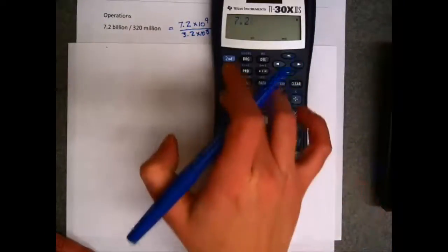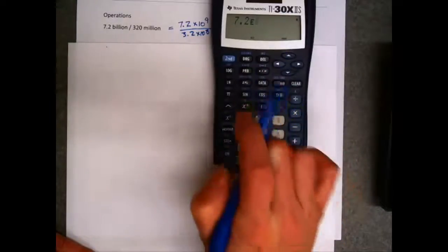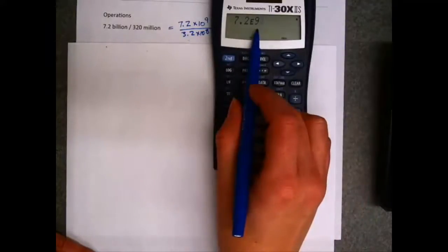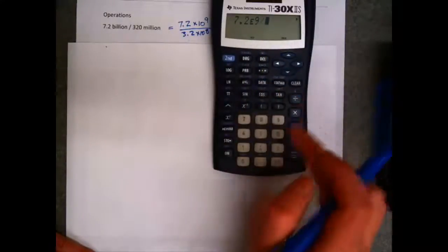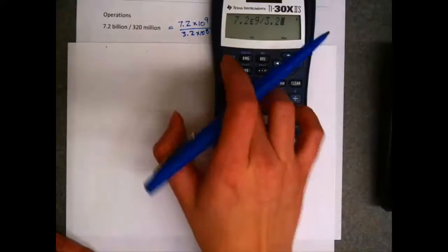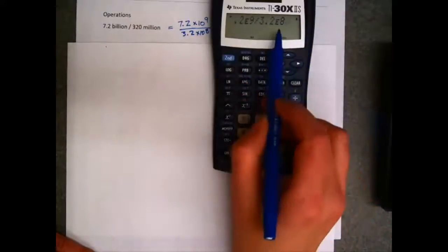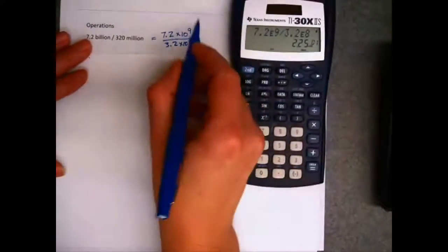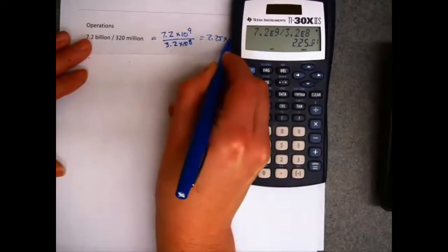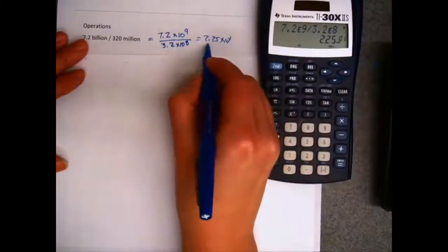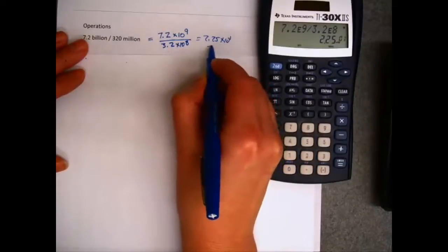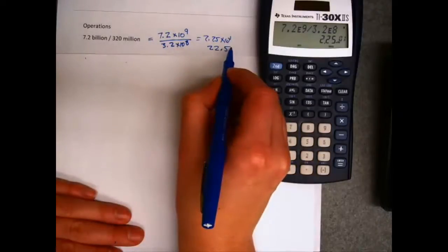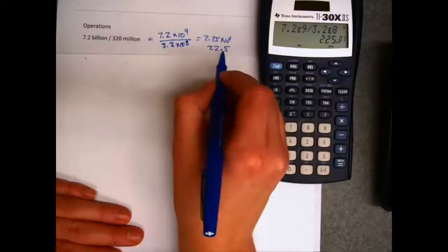I'd need to enter 7.2, hit my second button to get my E displayed there, and then I just enter the exponent 9 for times 10 to the 9th. Then I want to divide by 3.2, hit my second E button, times 10 to the 8th. And it tells me my answer is 2.25 times 10 to the 1. Well, that's just like saying 2.25 times 10. There's a ratio of 22.5 people in the world to one person in the U.S.